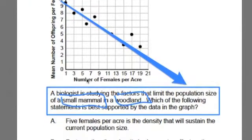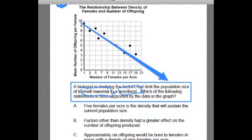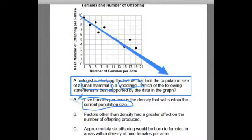Now let's look at our options here. Number one, which we're looking for the statement that's best supported in the graph. So it has to be in the graph. Five females per acre is a density that will sustain the current population. Well, we really don't know what the current population is. Nowhere in this question does it give us the current population of offspring or females. So A is not the answer.